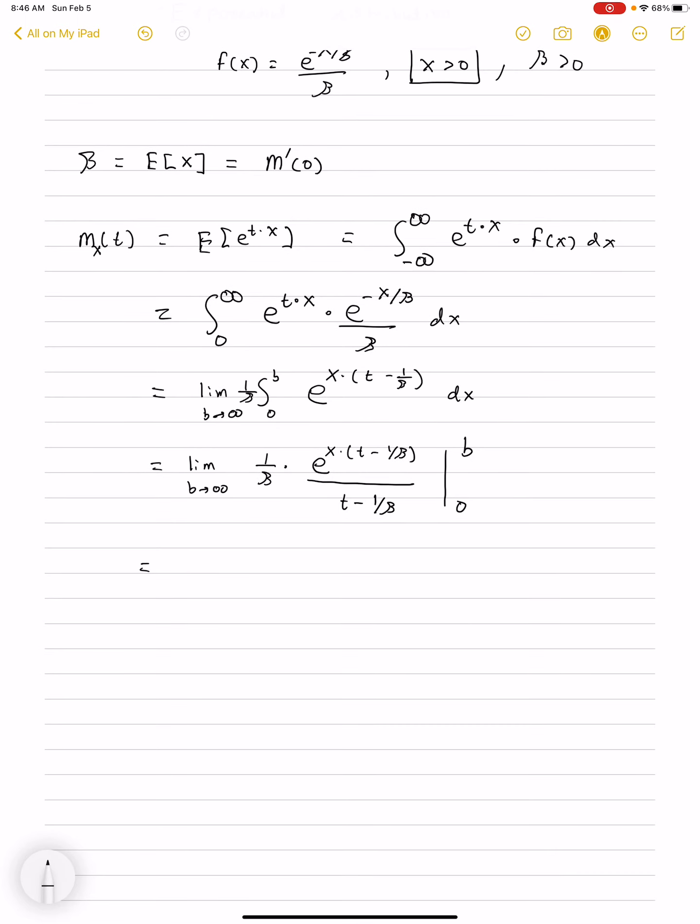Now, we'll plug in the limits of integration. The first one being a limit that we have to evaluate. So, this b is a large positive number going to infinity times t minus 1 over beta. Then, we divide by t minus 1 over beta.